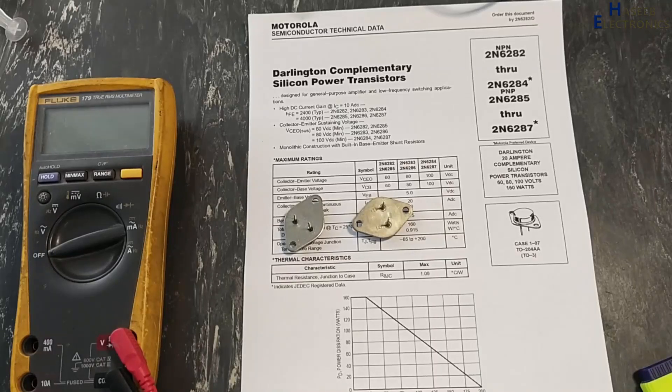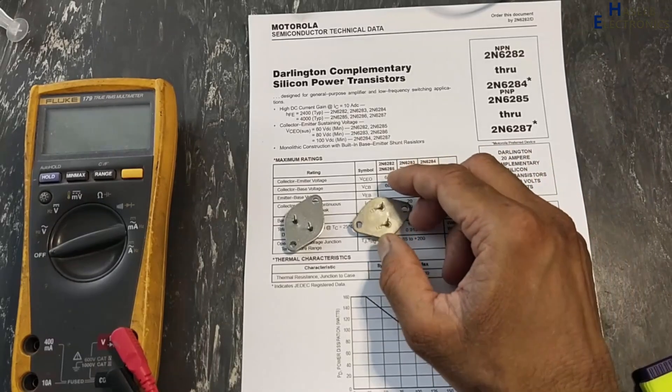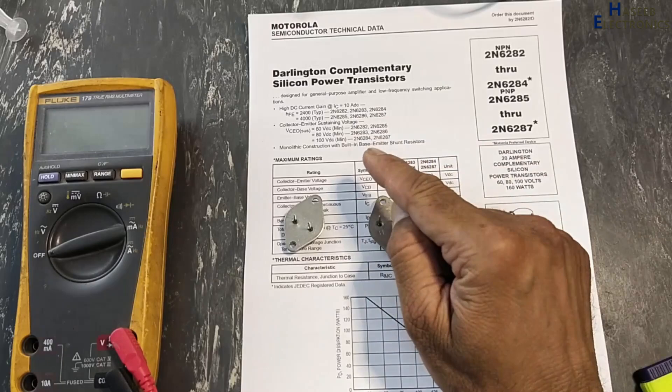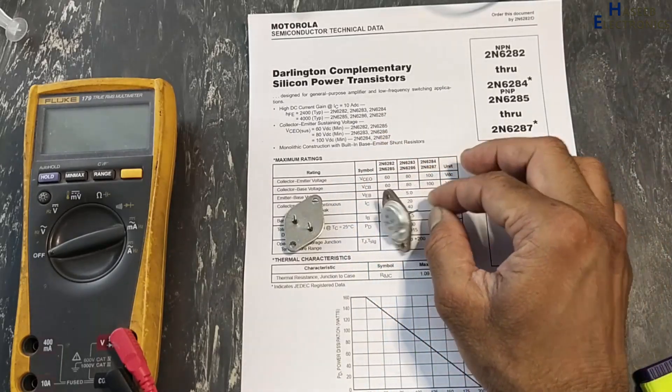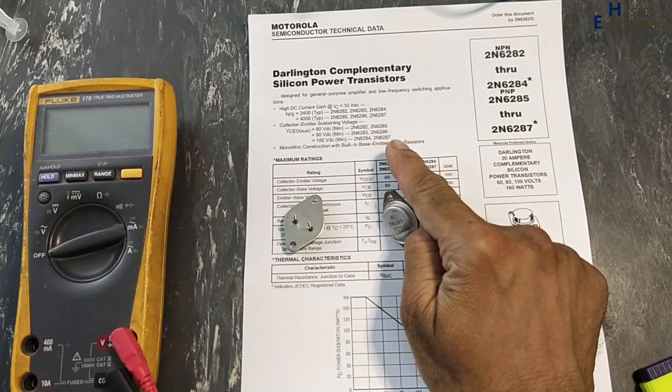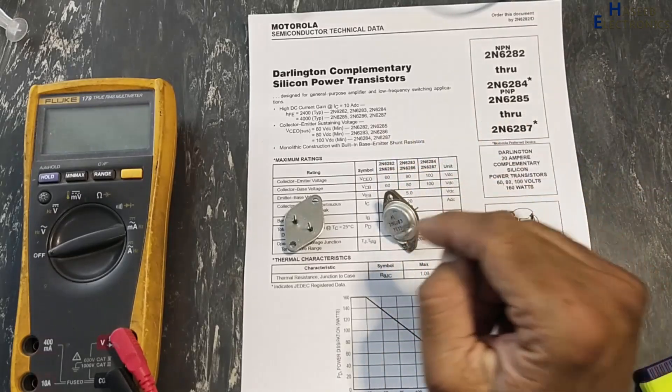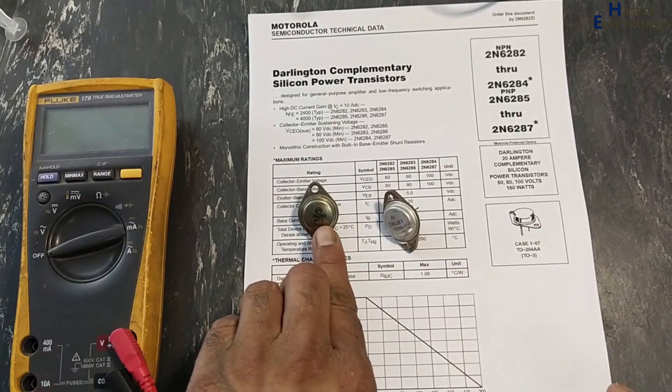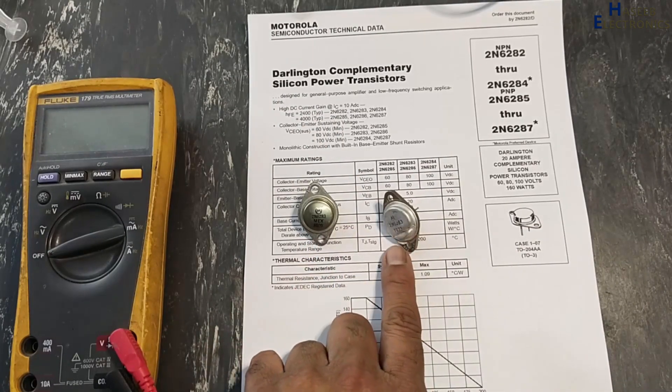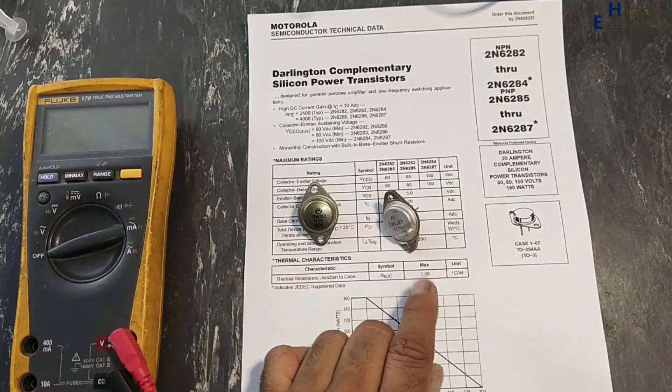Assalamualaikum warahmatullahi wabarakatuhu friends, welcome back to my channel. In this session we will see Darlington power transistor, how to test a good and bad transistor by comparing datasheet. This time I am testing 2N6283, 20 ampere NPN Darlington power transistor from Motorola.